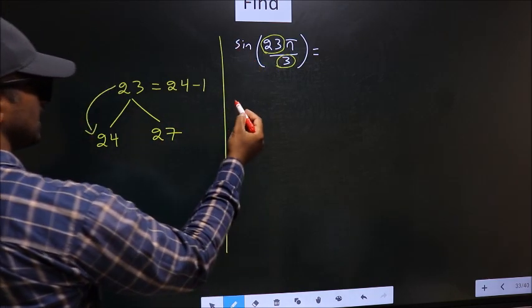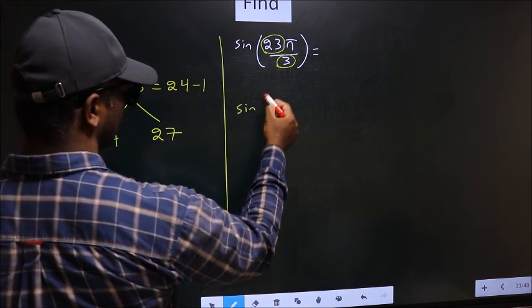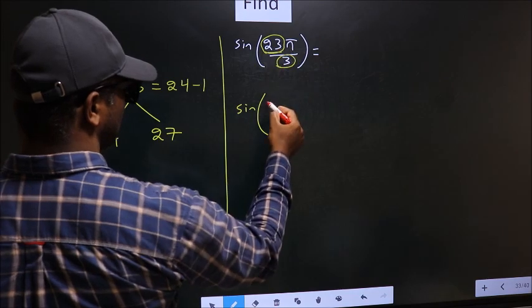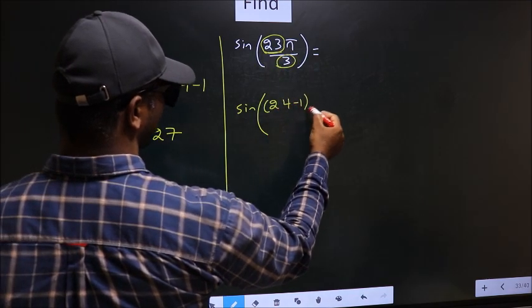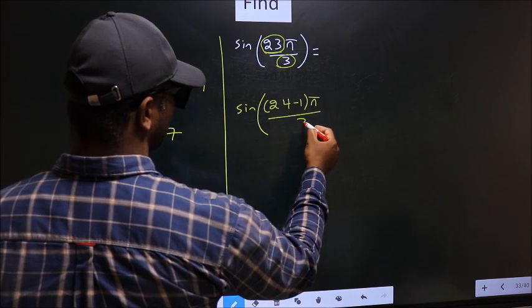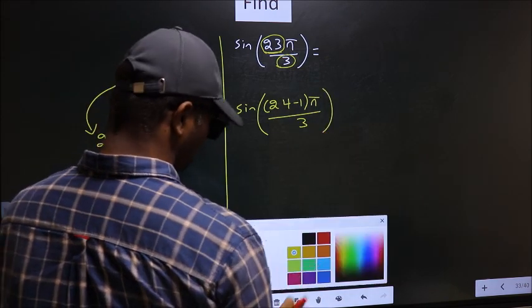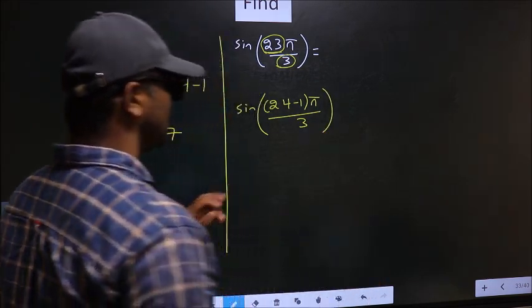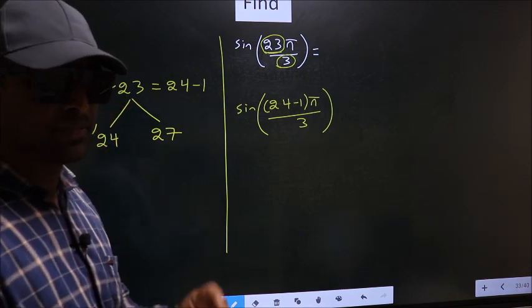So this will change to sine. In place of 23, now I write 24 minus 1, π by 3. This is your step 1.